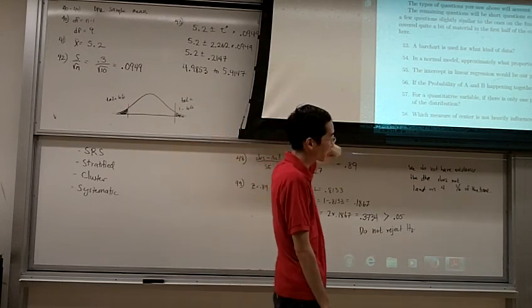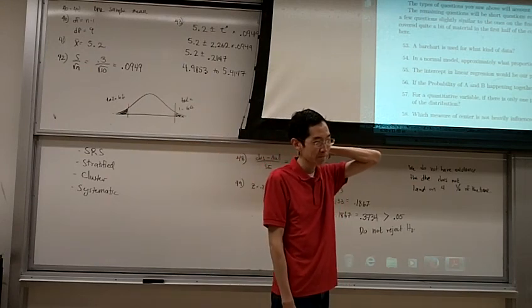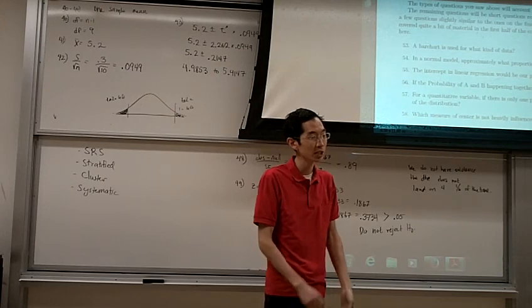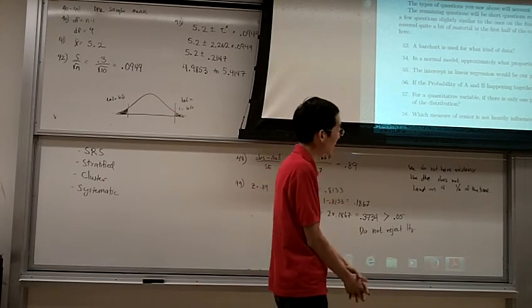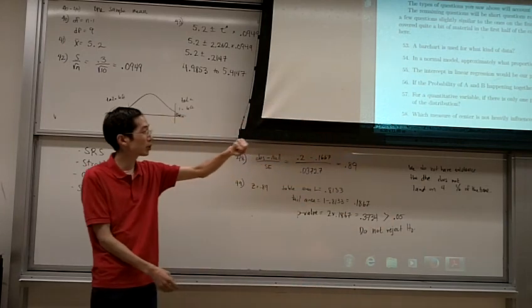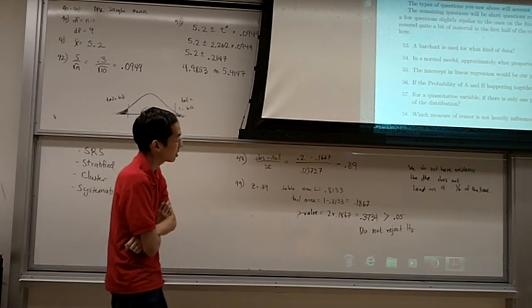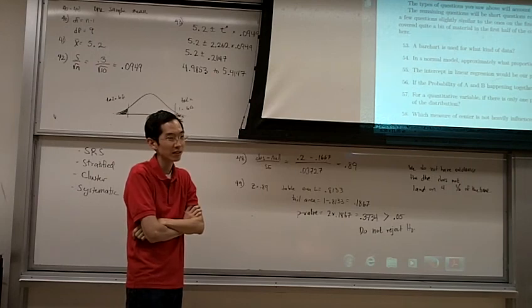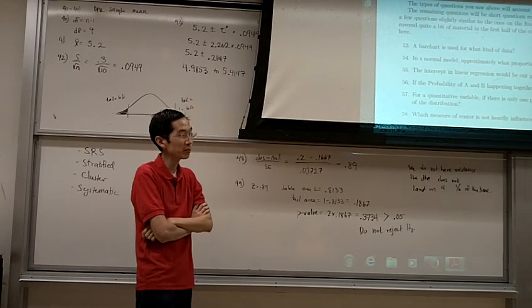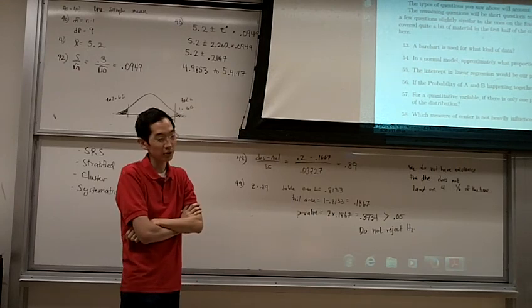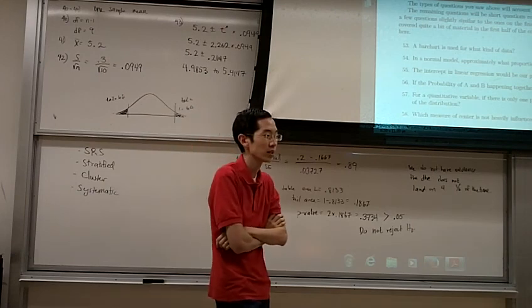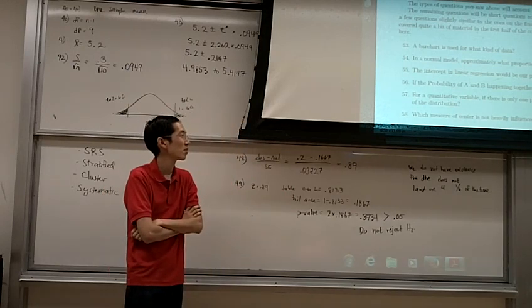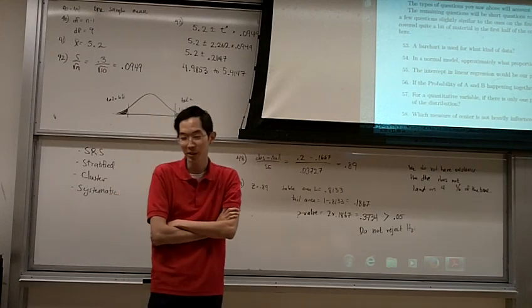What measure of center is not heavily influenced by extreme outliers? So what are the measures of center that we're talking about? The median or the mean. Which one is not influenced by extreme outliers? The median. What else can we say about the median? The median is the midpoint where half are larger and half are smaller. What can we say about the mean? The mean is the balancing point. The mean is the one where you add up all the numbers and divide by how many you have.